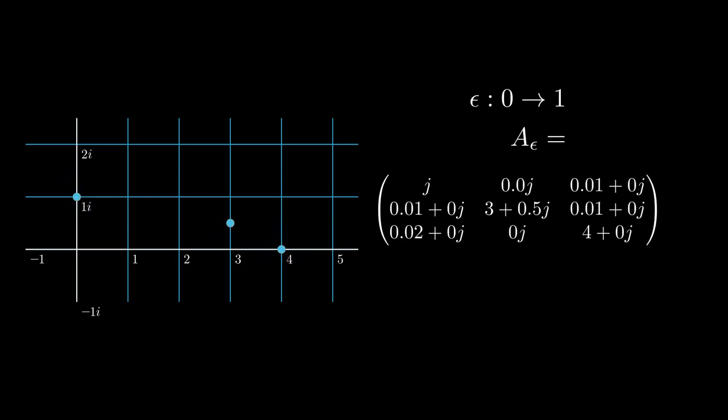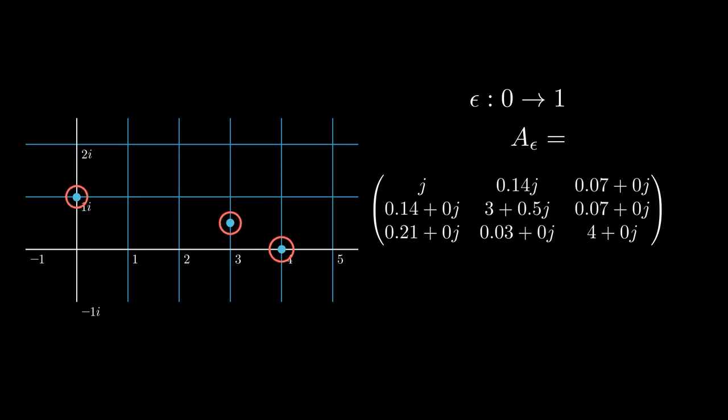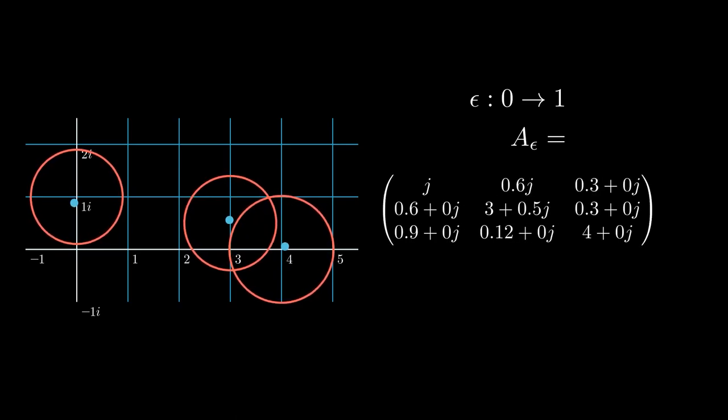Also, because our change of A_epsilon is somehow continuous, there is no way that an eigenvalue can jump into an unconnected area. So each disk contains exactly one eigenvalue. At the time two Gershgorin disks intersect, they form a connected component. Two disks are connected now, but the number of eigenvalues are still 1 plus 1 equals 2.